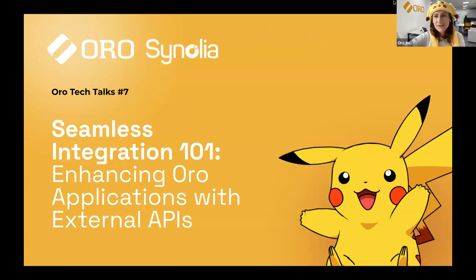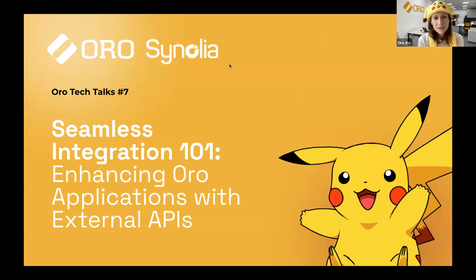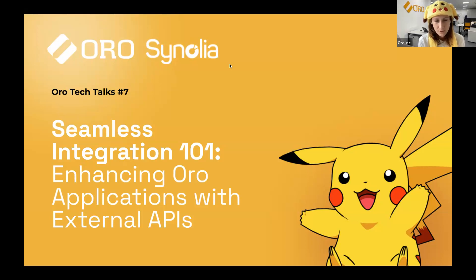Thank you so much everyone who joined us today. This is the seventh installment of our Oro Tech Talks, the webinar series created by developers for developers who also happen to be into Oro. Today we are talking about seamless integration 101, and we're going to be enhancing Oro applications with external APIs — specifically with the help of the Pokemon API.